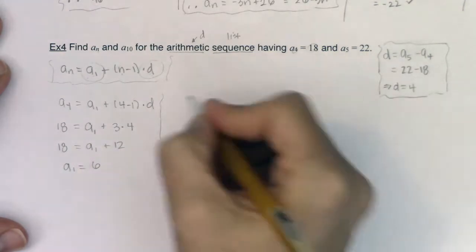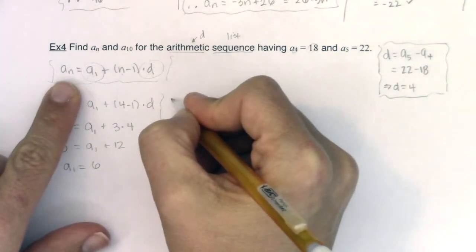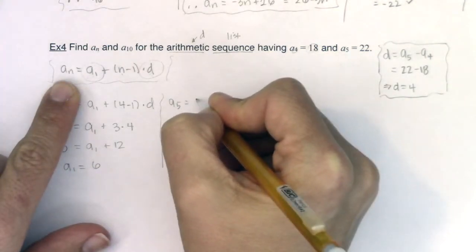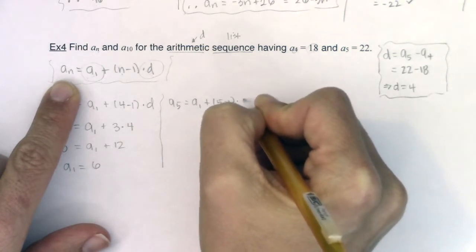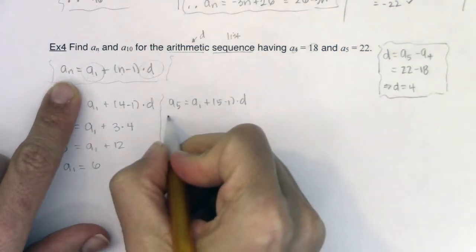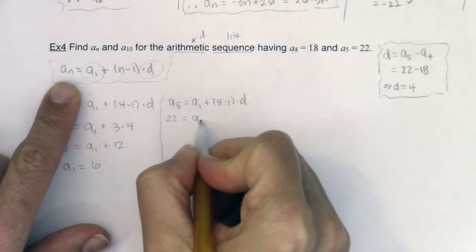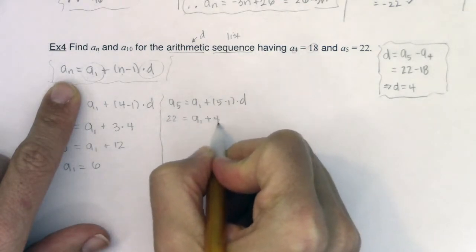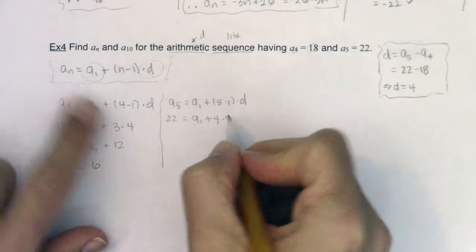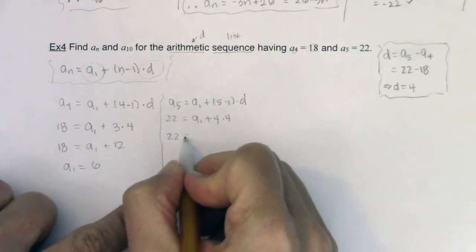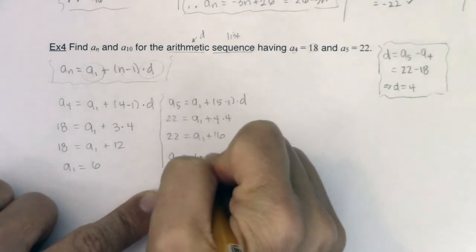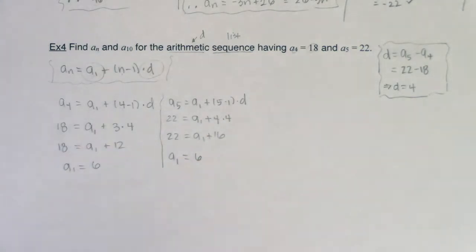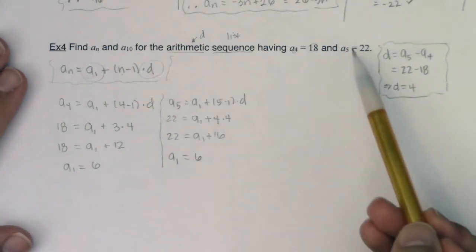So let me just show you, if you would wanted to, I could have worked it this way. I could have said a_5 was equal to a_1 plus 5 minus 1 times d. And let's fill this in. This would have been 22 would have been equal to a_1 plus 4 times 4. Well that's saying 22 would be equal to a_1 plus 16 and I'm still getting that a_1 is 6.